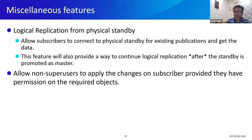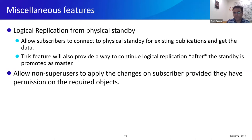I will also talk about some other miscellaneous features, including allowing logical replication from a physical standby. As of now, if the primary database goes down, subscribers cannot connect to the physical standby and continue replication. With this new feature, we can allow subscribers to connect to the physical standby for existing publications and get the data. This feature will also provide a way to continue logical replication after the standby is promoted to master. This work is not going to be done in PostgreSQL 15 — probably in future releases — but we know it is very important and will help a lot of users.